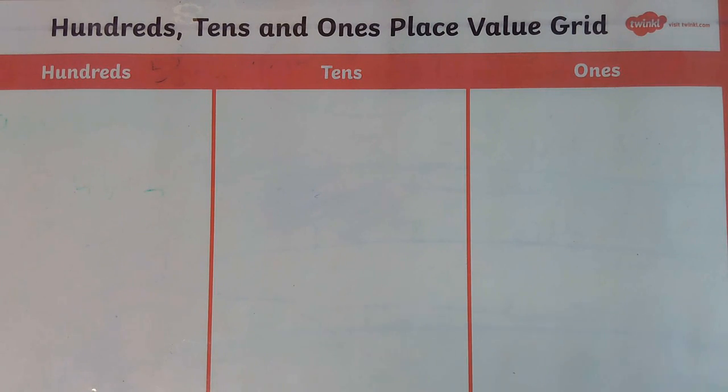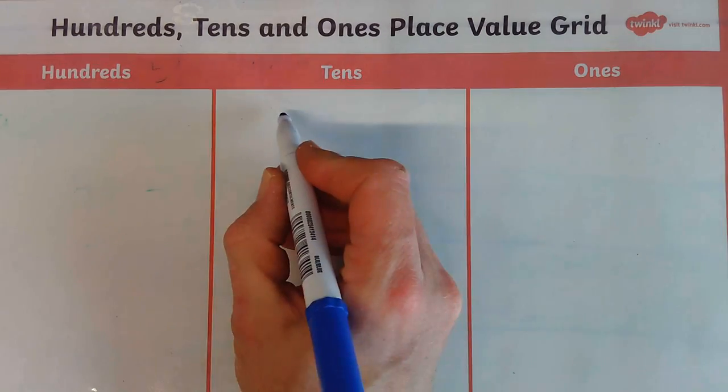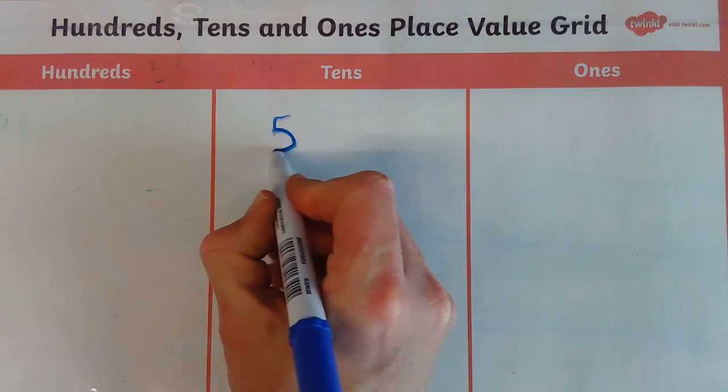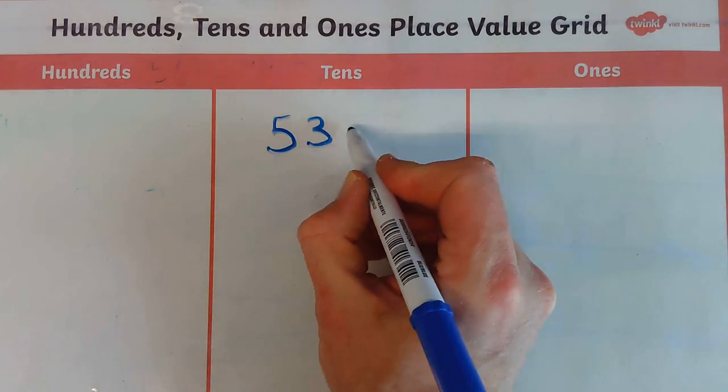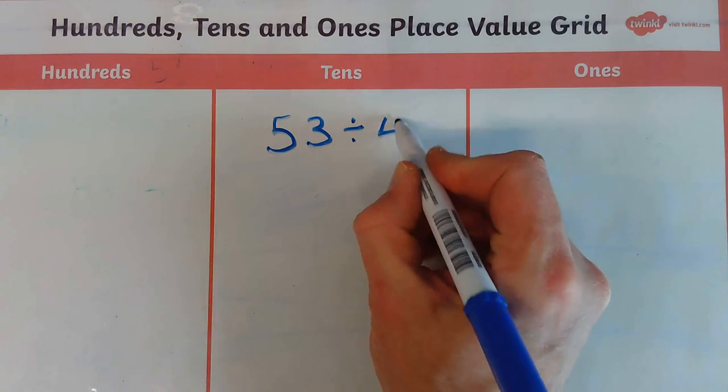Okay, this is just a quick video to show how we can use counters to work out division in maths. So I'm going to work out the calculation which is going to be 53 and I'm going to share it between 4.